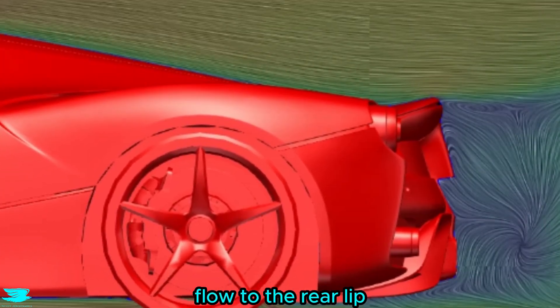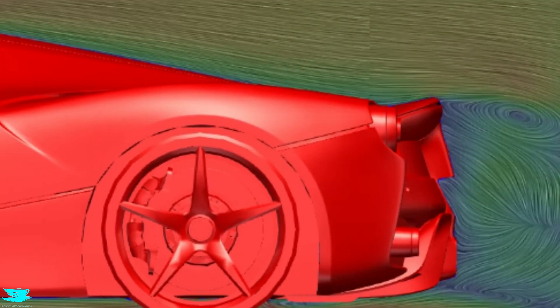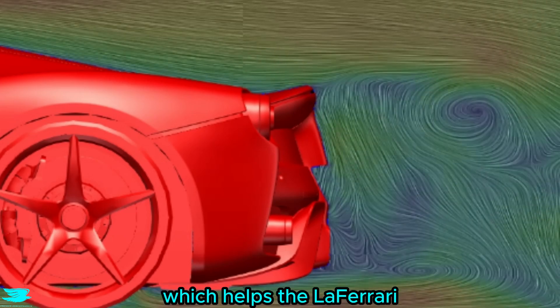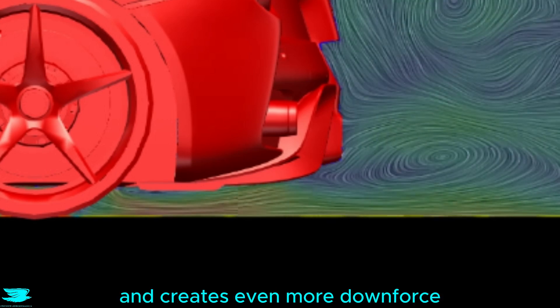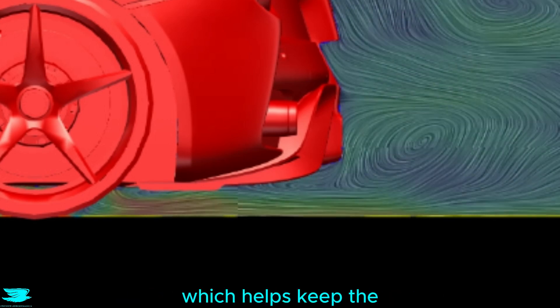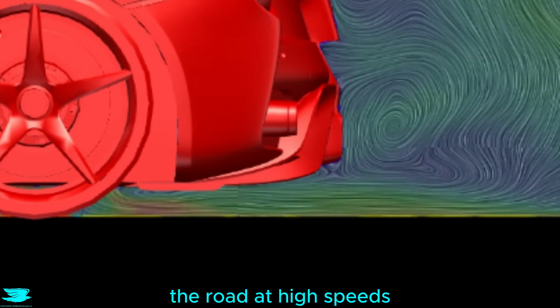The rear feeds clean flow to the rear lip, which despite being tiny, kicks the flow up a lot, which helps the LaFerrari produce good downforce here. The diffuser is also doing a great job. It keeps the floor attached and creates even more downforce, which helps keep the LaFerrari from flying off the road at high speeds.